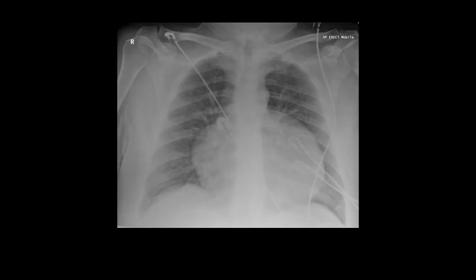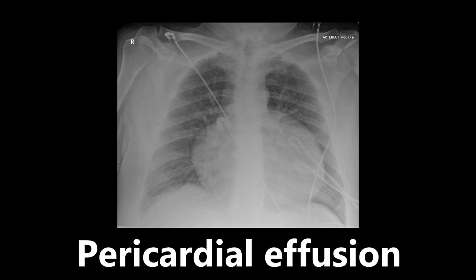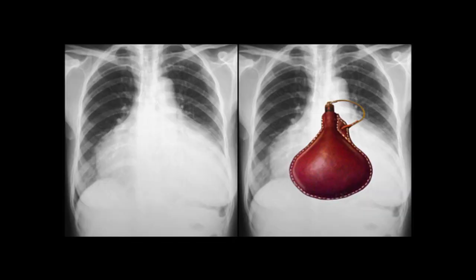Next, we have a chest x-ray, and we can see a really big abnormality with the cardiac silhouette. This is a sign of a pericardial effusion. The sign is called the water bottle sign, because the heart is so abnormally shaped it looks like a water bottle. There's all of that fluid — that effusion — around the heart. So if you see that, you want to be thinking pericardial effusion.